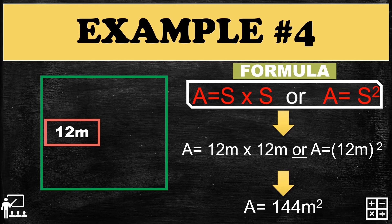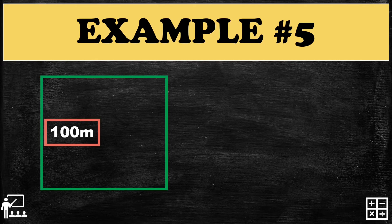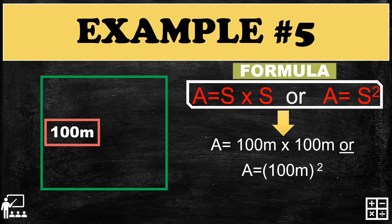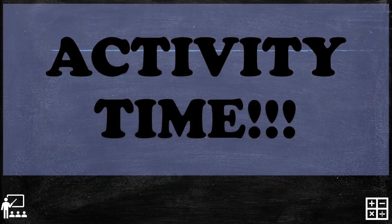Let's try the last example. A square has a side of 100 meters. Use the formula and substitute the measurement of the side. If we multiply 100 by 100, the answer is 10,000. Multiplying the units, meters times meters gives you meters squared. So the answer is 10,000 meters squared.